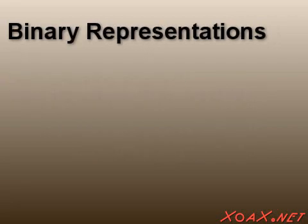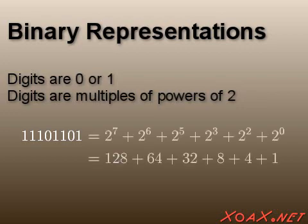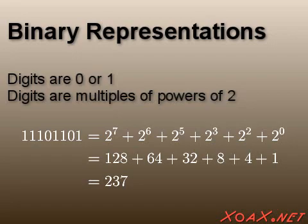In a binary representation, the digits are all either 0 or 1 and are multiples of powers of 2. In binary, the number 237 is represented as 11101101. This number is equal to 1 times 2 to the 7, plus 1 times 2 to the 6, and so on. The sum of these powers of 2 is 237, as we expect.